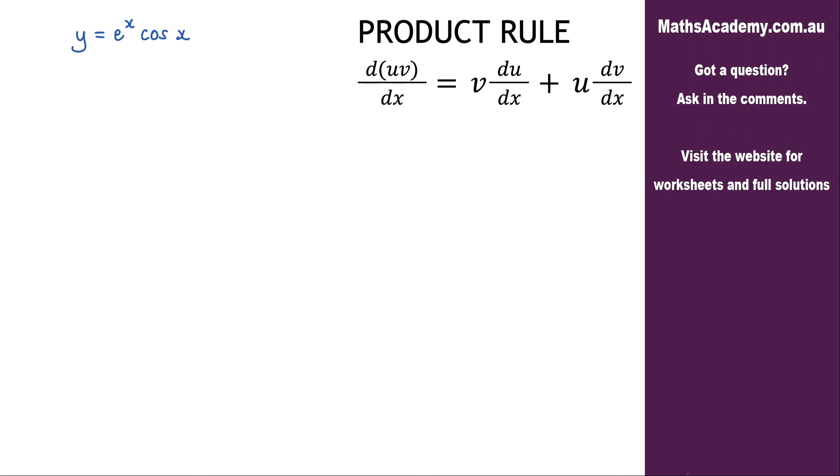For this question we're asked to differentiate e to the x cosine of x and we're going to use the product rule. Over here on the right hand side I've just written out the product rule for you as a quick reminder.